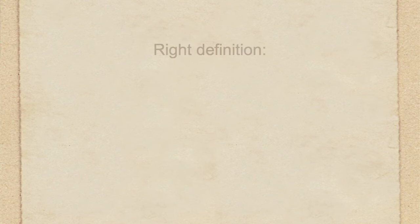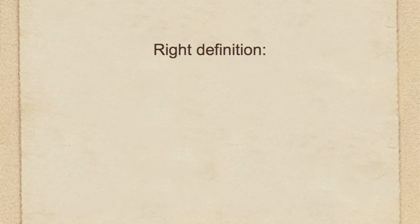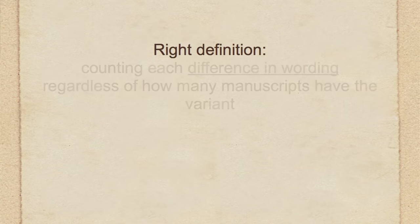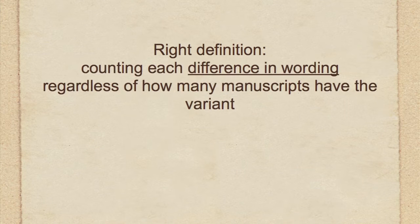The real way to count variants is this: every single time you have a change in the wording among these witnesses, that counts as a variant. Regardless of how many manuscripts you have that back it up, it still counts as just one variant.